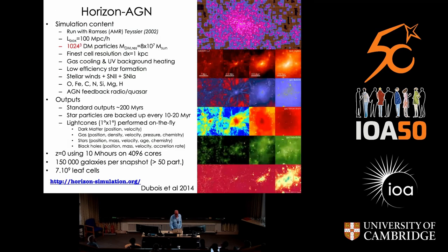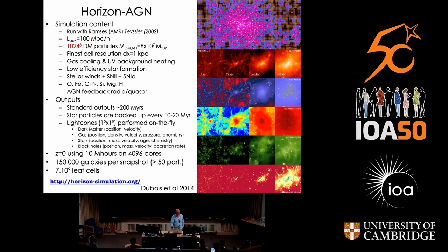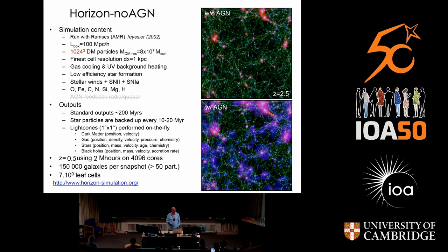I have a brief slide about the HorizonAGN simulation, which is typical of these boxes. I use it not only because I'm familiar with it, but also because it has a counterpart called HorizonNoAGN — the exact same identical simulation except AGN feedback has been switched off — which allows me to show what this sub-grid model is doing to the properties of galaxies in much more detail.